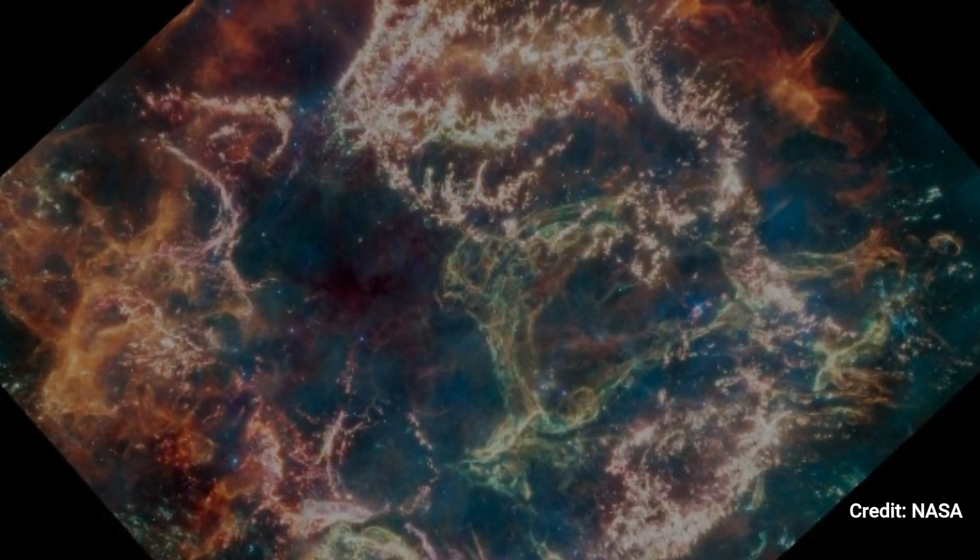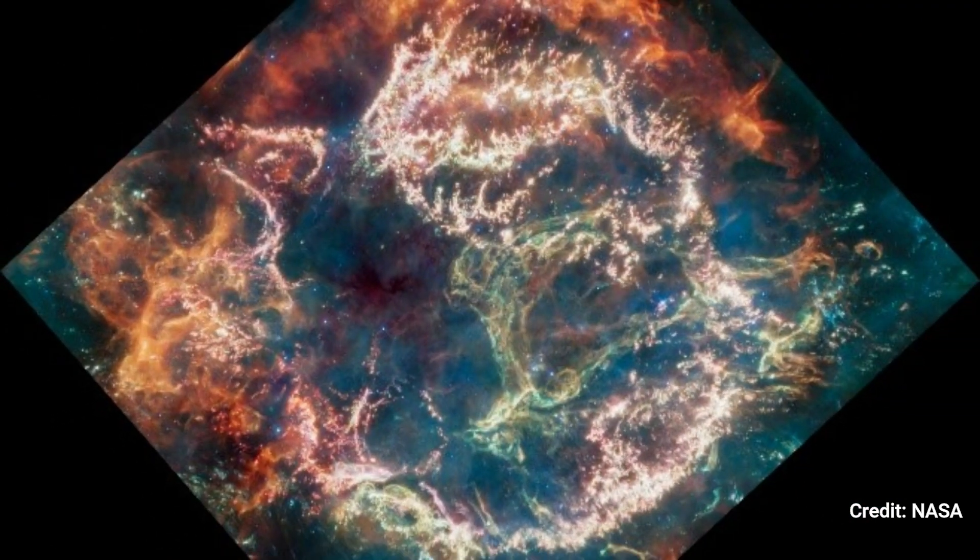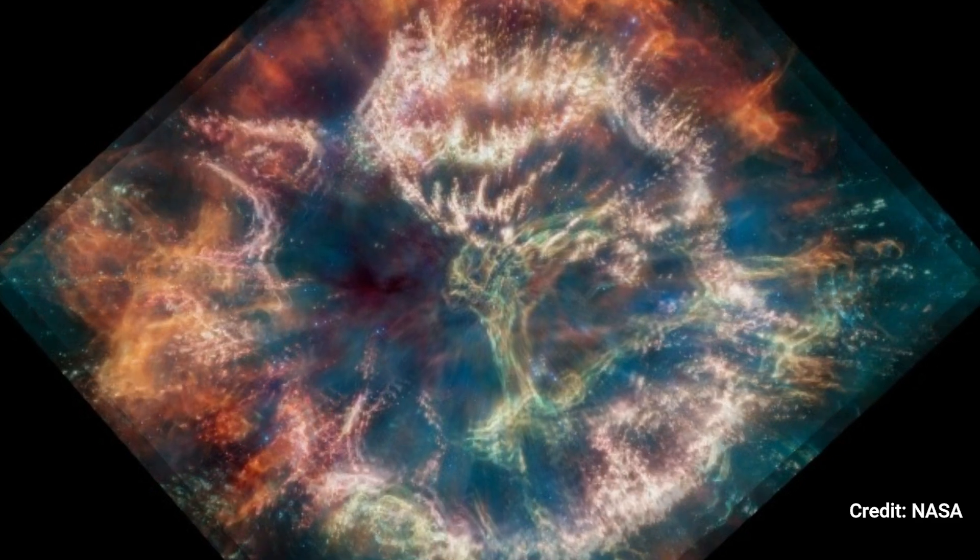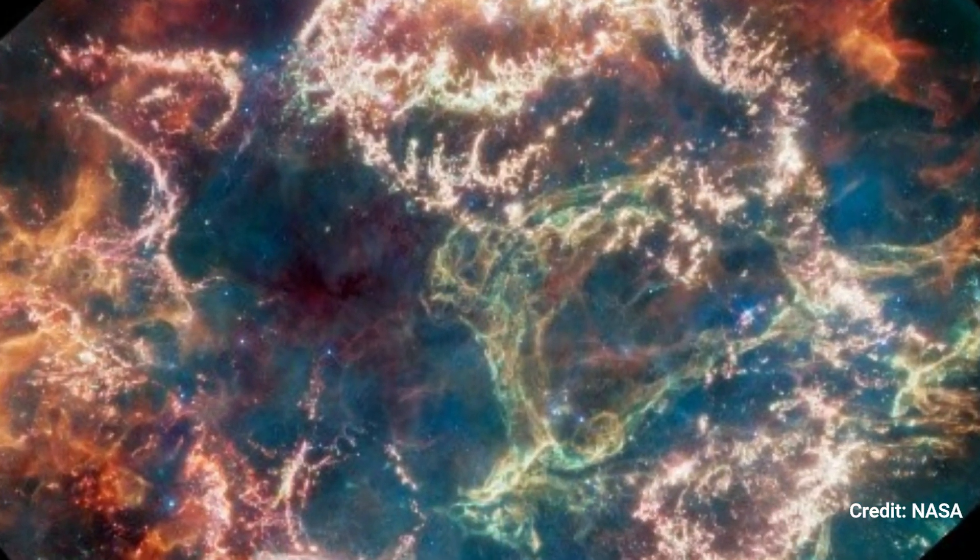The color red is assigned to 25.5 microns, orange red to 21 microns, orange to 18 microns, yellow to 12.8 microns, green to 11.3 microns, cyan to 10 microns, light blue to 7.7 microns, and blue to 5.6 microns. The information comes from General Observer Program 1947.